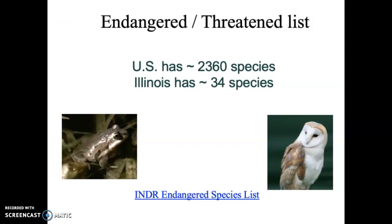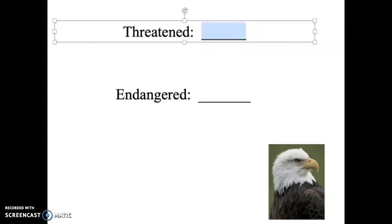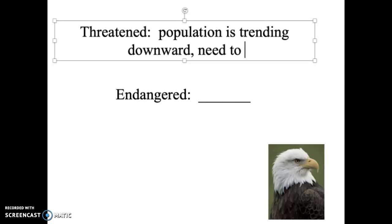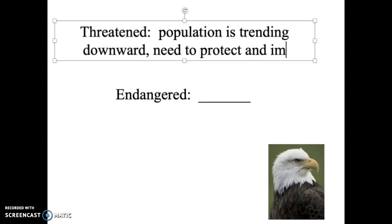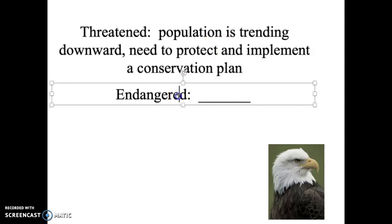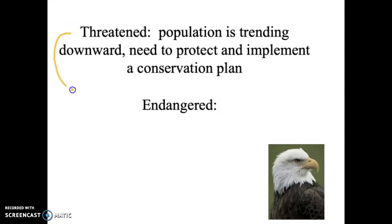What does it mean when you see something on a list and it says it is threatened? Generally, when we indicate a species is threatened, its population is trending downward. What you need to do is implement a conservation plan — protect that species, figure out what's causing the problem, develop a conservation plan, and get it implemented. Because if you don't, that threatened species is going to move to the endangered status.